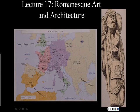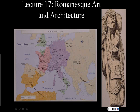Romanesque is a term that means Roman-like. It was coined in the 19th century to describe church architecture from about the 11th to 12th century. It is basically a stylistic term, not a historical term, and it's meant to describe the time of simple, rounded arched forms that we see in church architecture at this time.